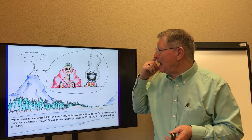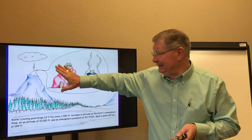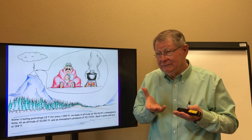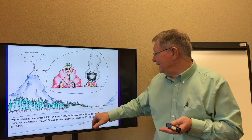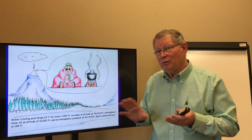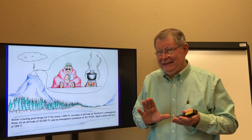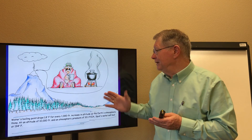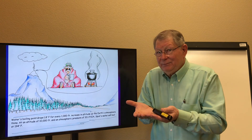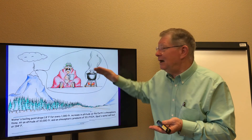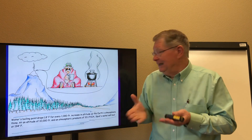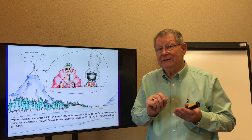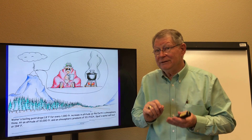If we put Spud on top of a mountain at 10,000 feet, there's less air and less PSIA — only 10.1 pounds per square inch atmosphere. There's less weight pushing down on the top of this pot, and what we can do now is boil water at just 194 degrees Fahrenheit.